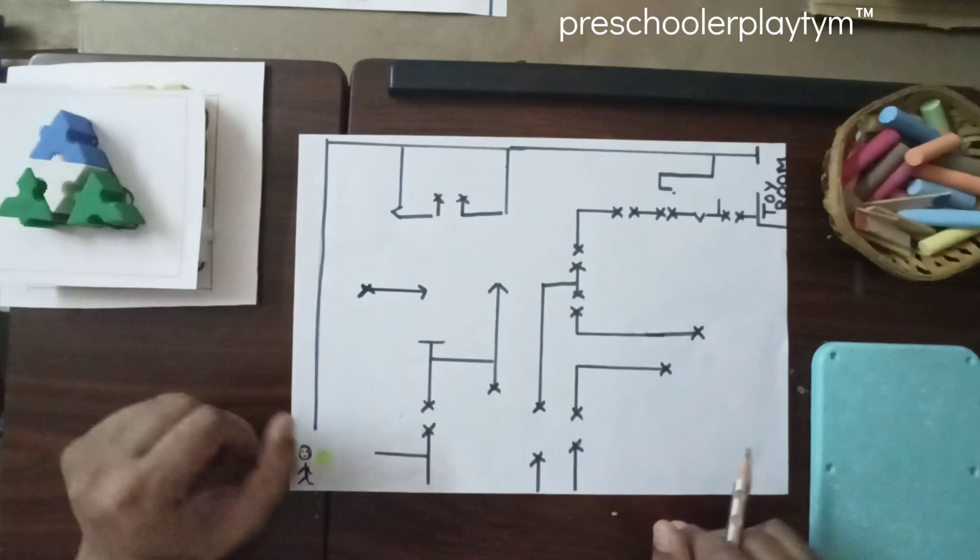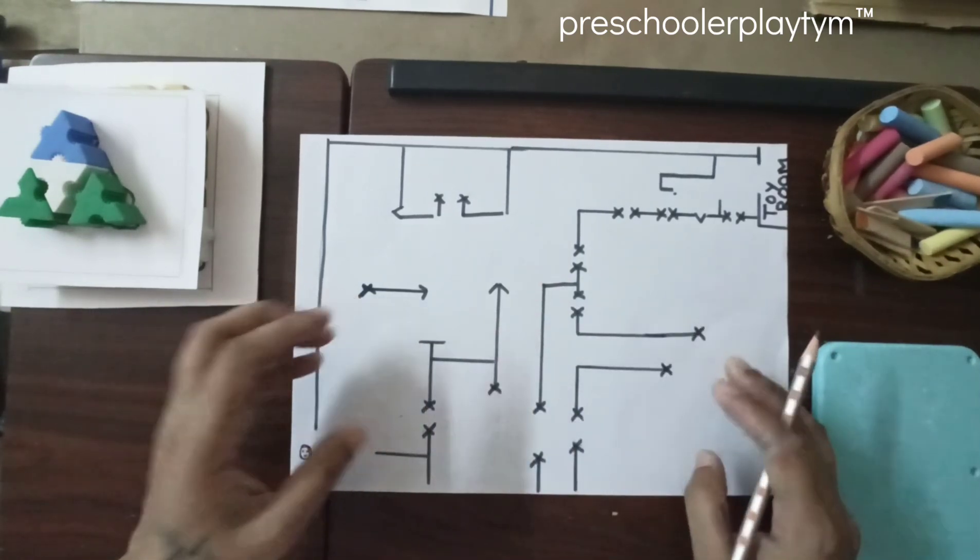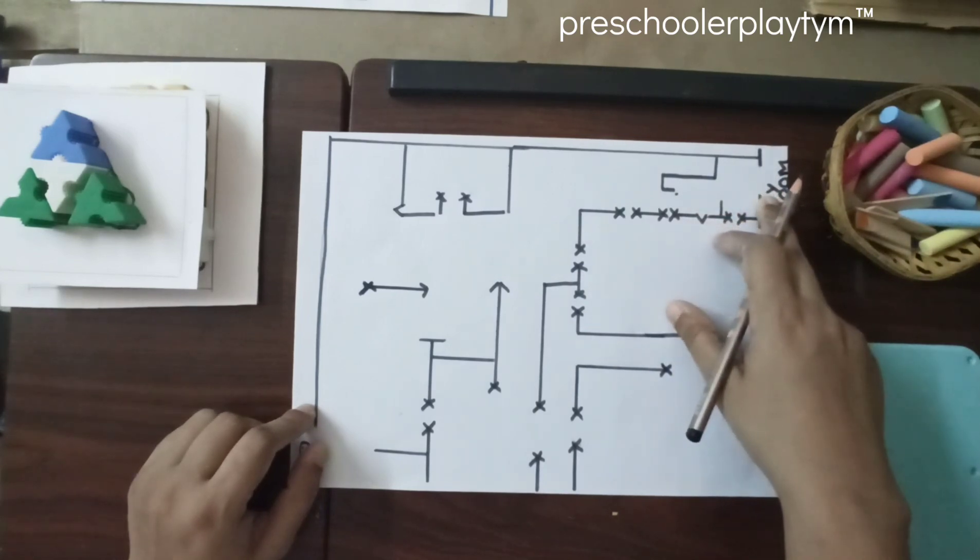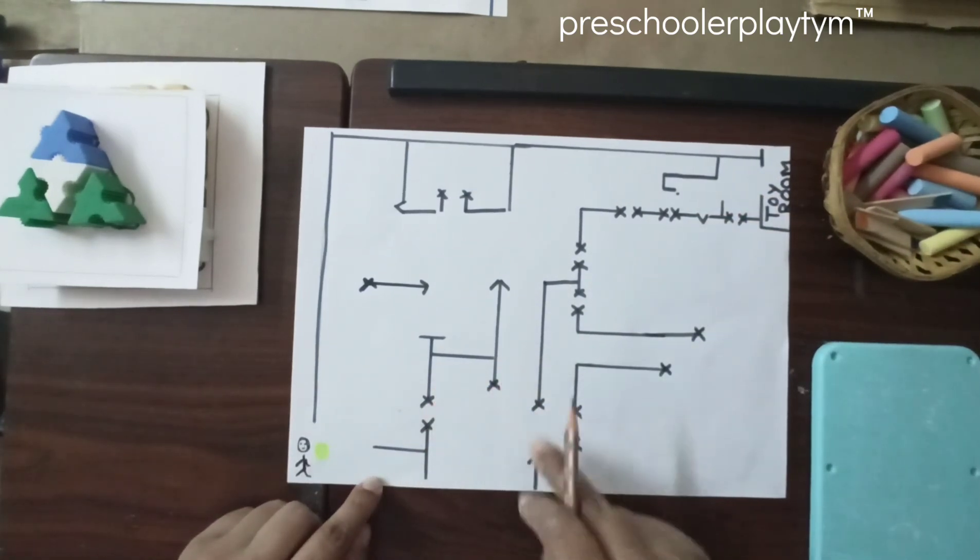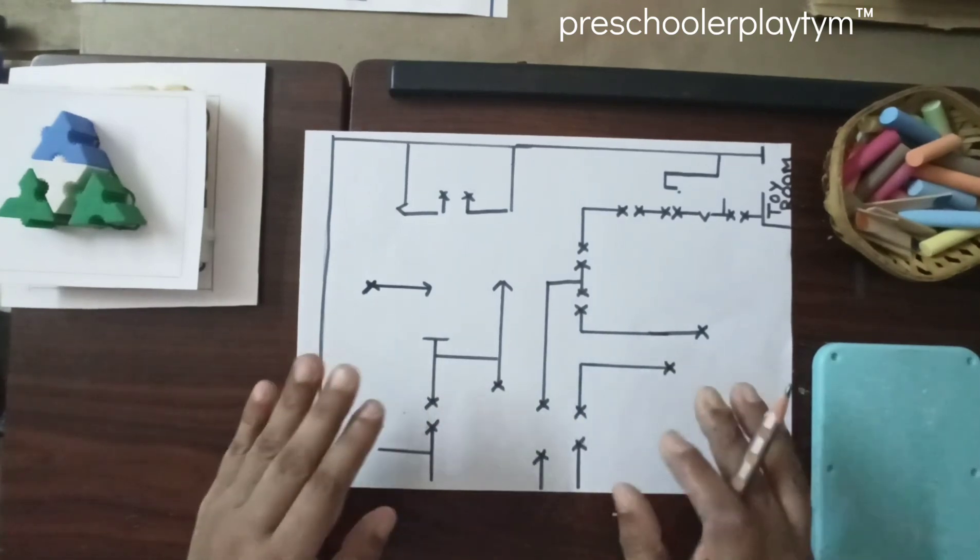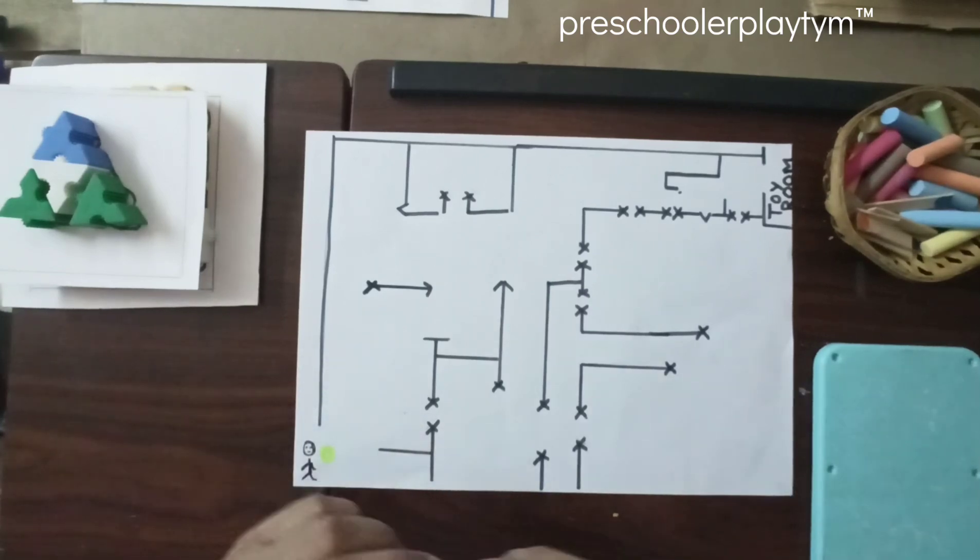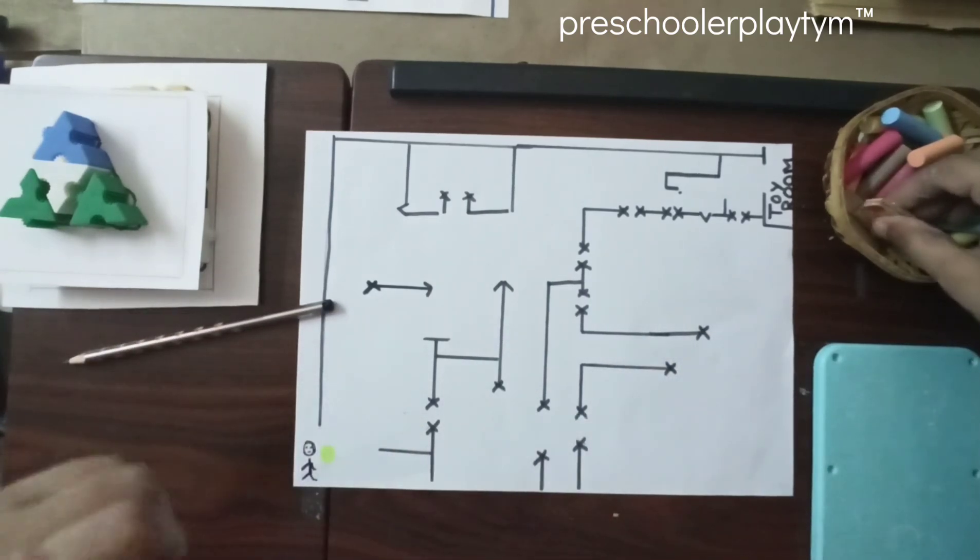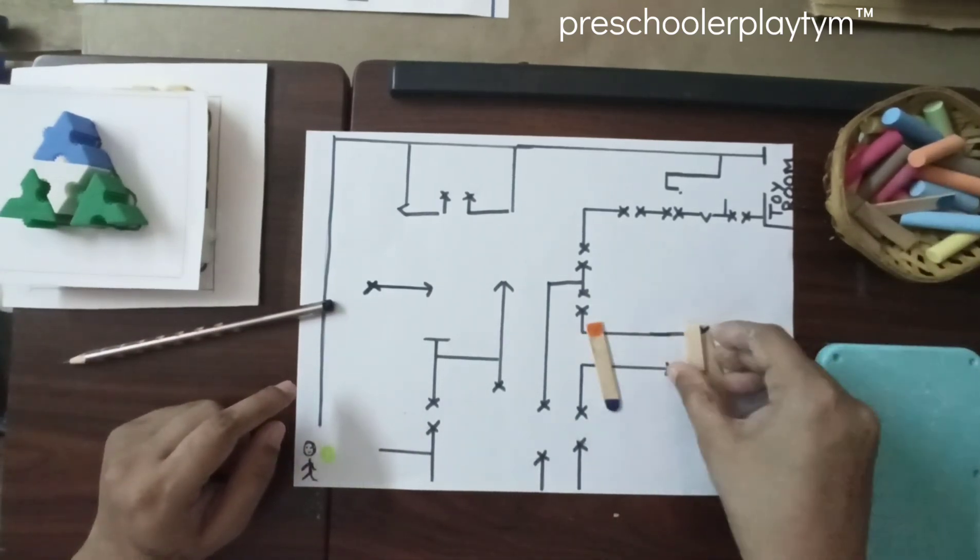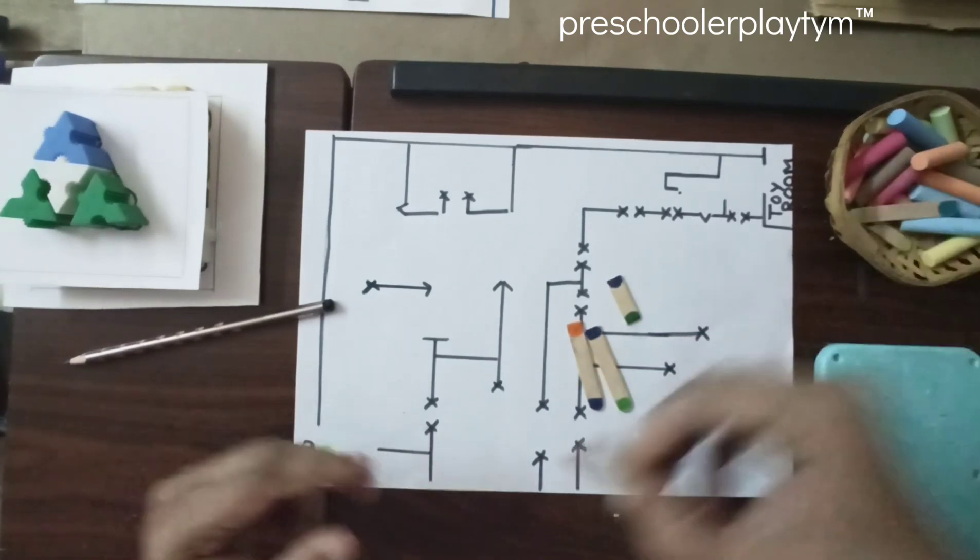The storyline I've created for this maze is, there is a kid who is in their house, and they need to reach to the toy room. These cross marks show that this way is a non-usable way for them. They need to not go through that route. For that, I have made these crosses, which you need to tell your little ones, and I have made these little color popsicle cutouts.